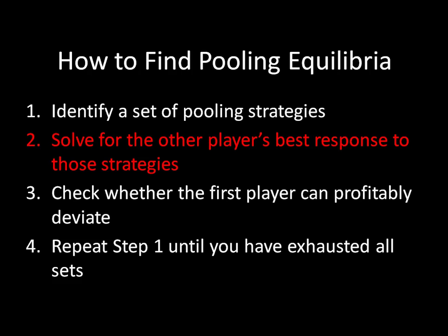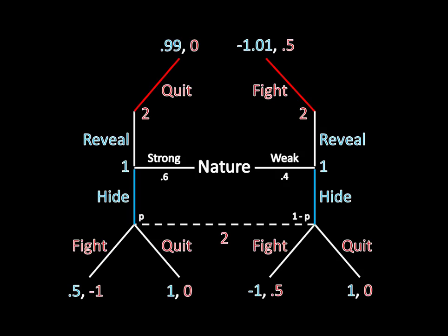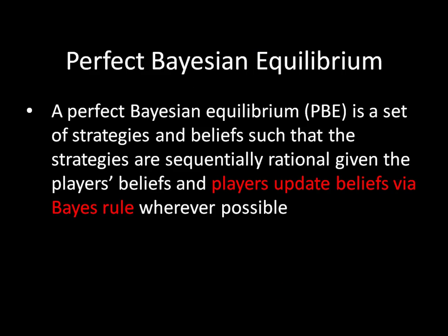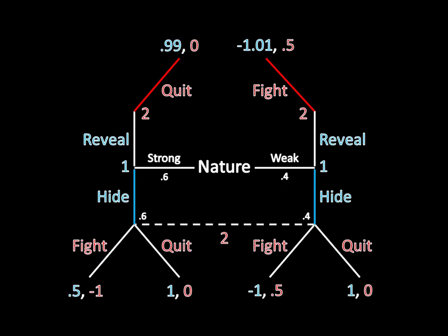That means we can go straight to the next step: solve for the other player's best response to those strategies. In order to solve for the best response, we have to identify what Player 2's belief is. Players are updating via Bayes rule in a perfect Bayesian equilibrium. For pooling equilibria, Player 2 is not getting any extra information about Player 1 based on the strategy. So her posterior belief — her belief conditional on having observed hide — needs to be identical to her prior belief. So 60% of the time she's still thinking she's facing the strong type, and 40% of the time the weak type.